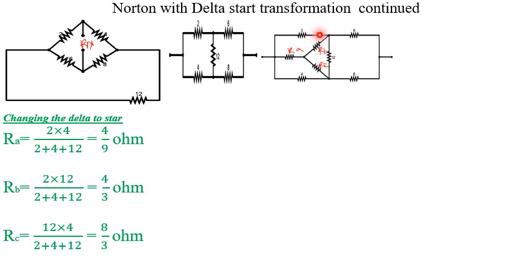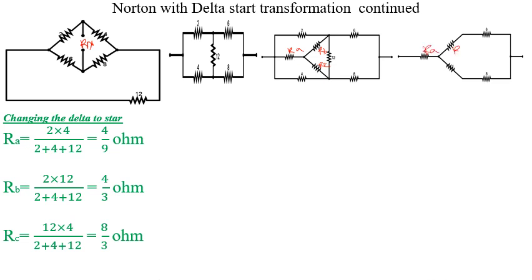To calculate Rb it is 2 times 12 over the sum of the delta resistors, and to calculate Rc it is 12 times 4 over the sum of all delta resistors. After calculating all values, we remove the original delta resistors (2, 12, and 4) since they have been resolved into Ra, Rb, and Rc, giving us the new simplified circuit.